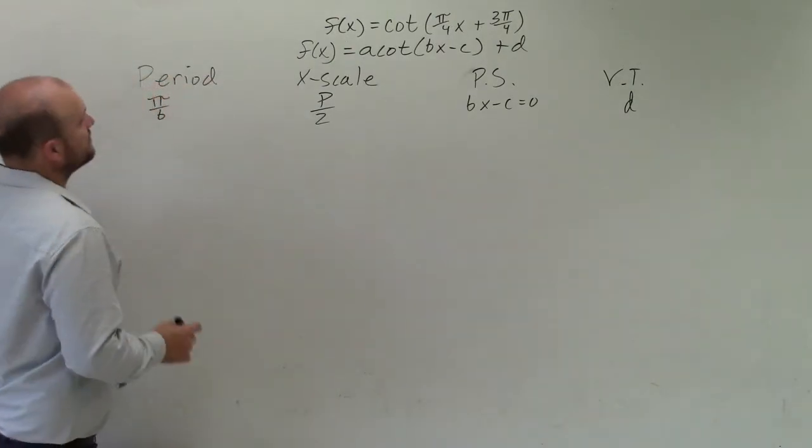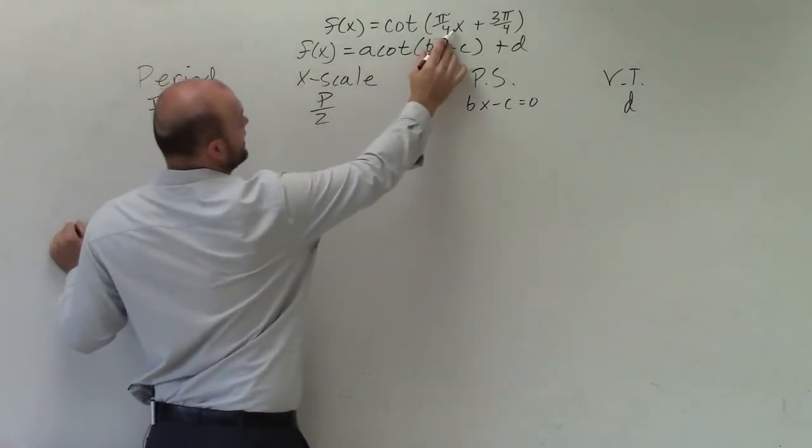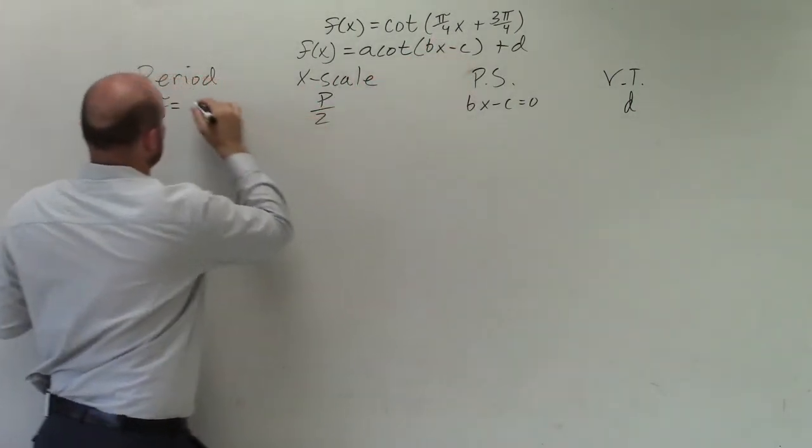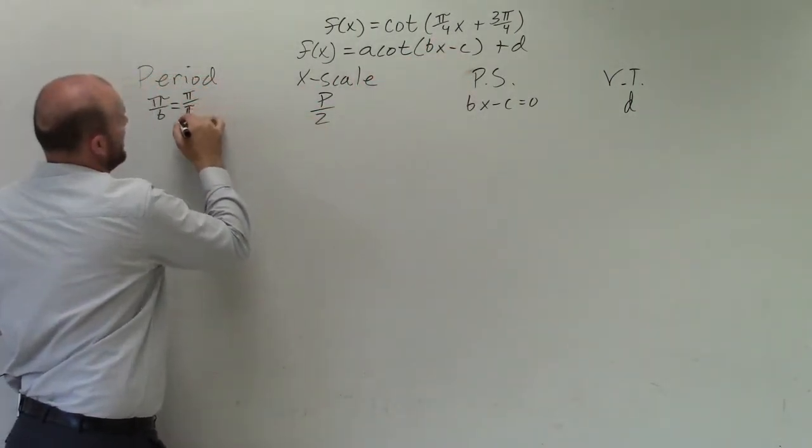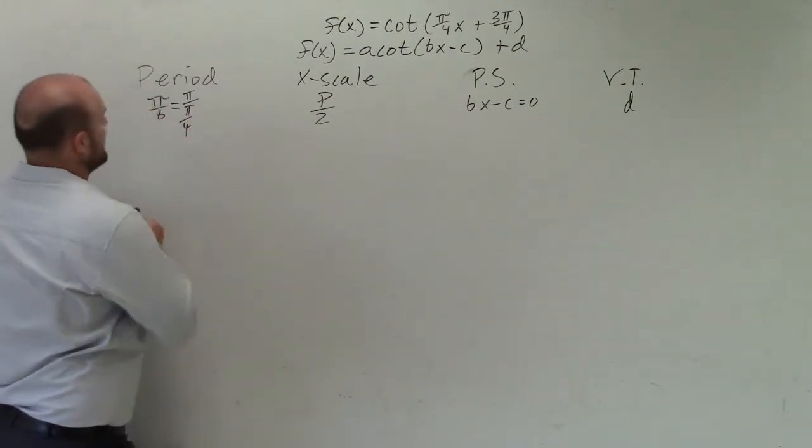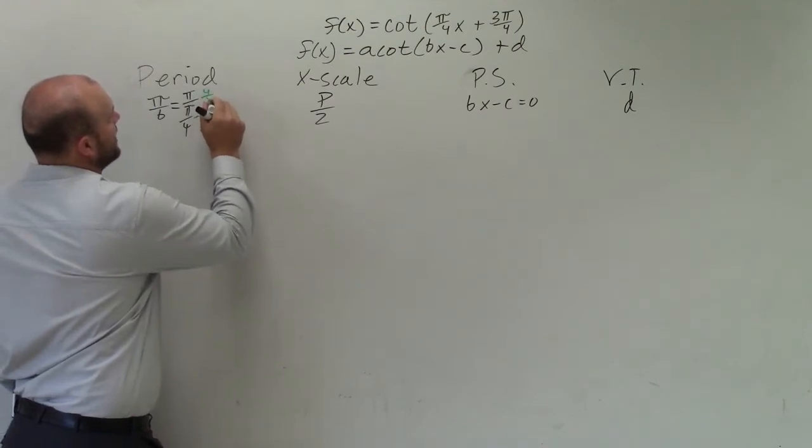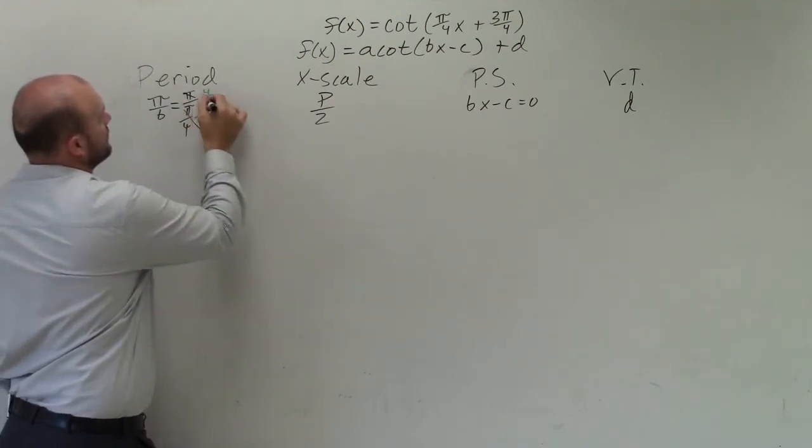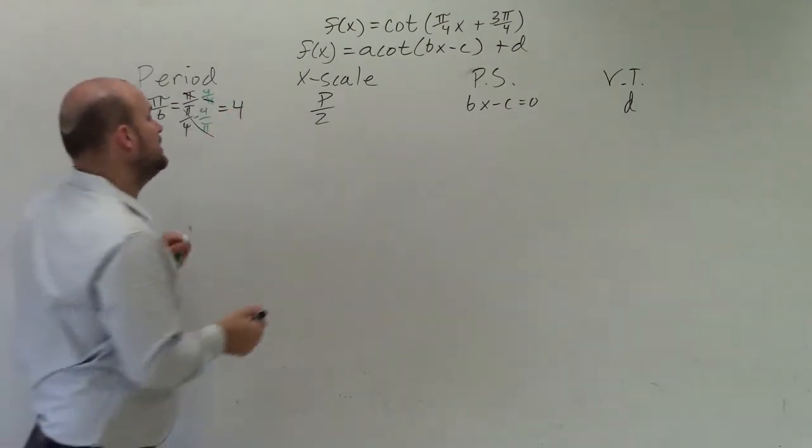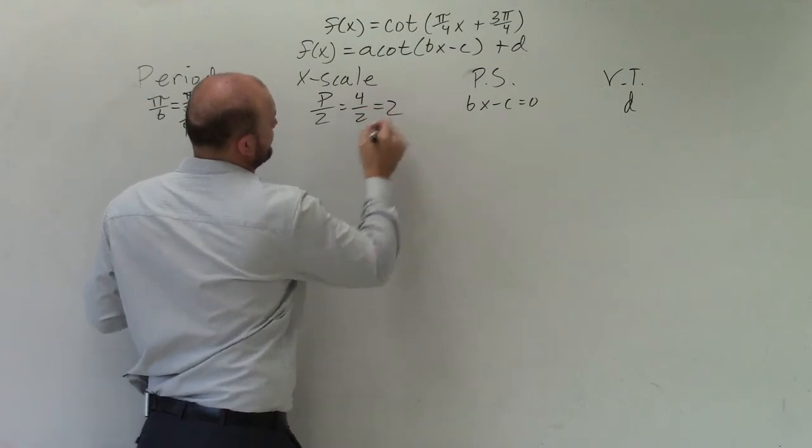Let's go ahead and determine our period. b is the variable that's in front of your x. So I'm going to have pi divided by pi over 4. To simplify that, I'm going to multiply by the reciprocal, 4 over pi. So I now just have a period of 4. Then I take my period and put it in here. That's 4 over 2, which equals 2.